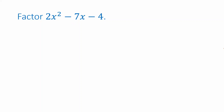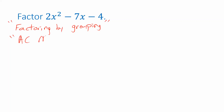The technique we're going to illustrate is called factoring by grouping, or in some books the AC method. If we think of a general trinomial as ax squared plus bx plus c, the AC method tells us to look for factors of AC — that is, a times c.